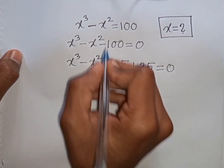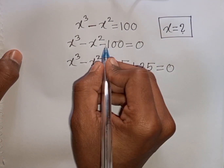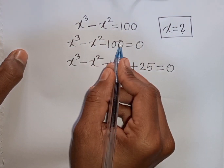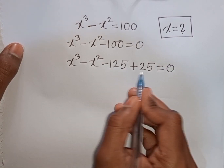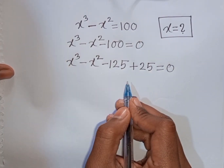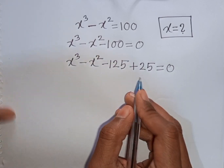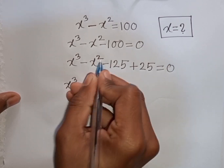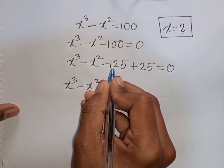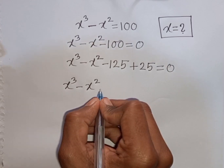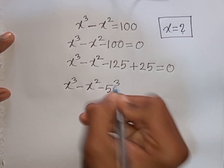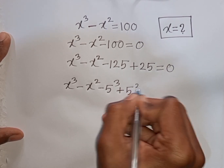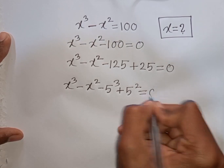How to understand this? The nearest cubic number to 100 is 125. So we can write minus 100 as minus 125 plus 25. Now, minus 125 can be written as minus 5³, and plus 25 is the same as plus 5².